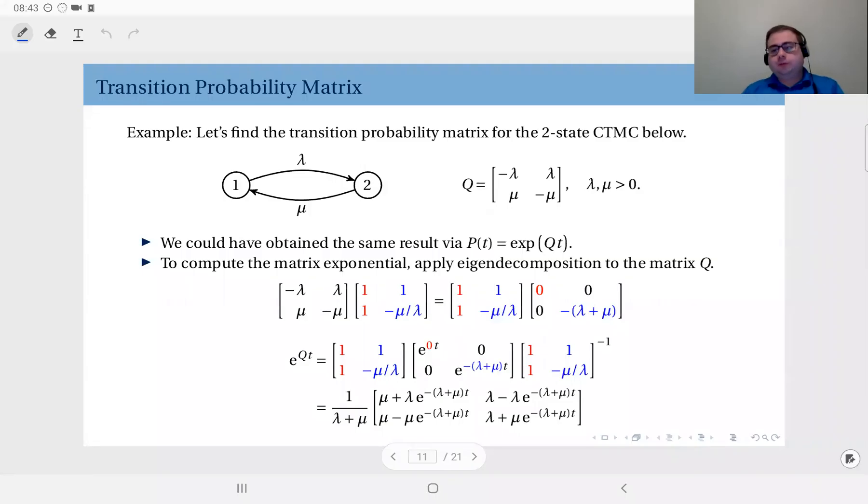Now we have seen how to solve the state transition probability matrix from the infinitesimal generator via the solution of the differential equation.